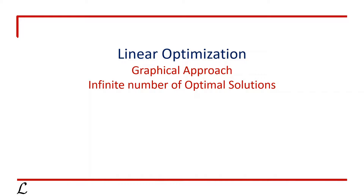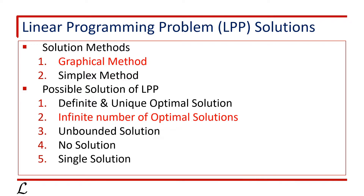In the previous video, we learned about the case with a definite and unique optimal solution of a LPP using the graphical method. If you haven't watched that video, the link is in the description below. The LPP can be solved using the graphical method for two variables, or the simplex method for more variables. There are five possible solutions of a LPP. In this video, we will learn about the infinite number of optimal solutions.